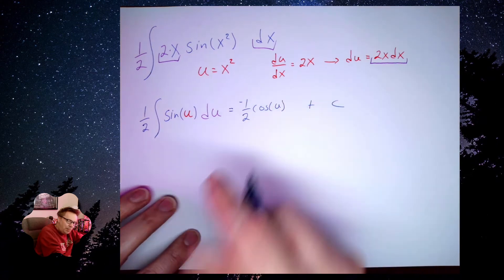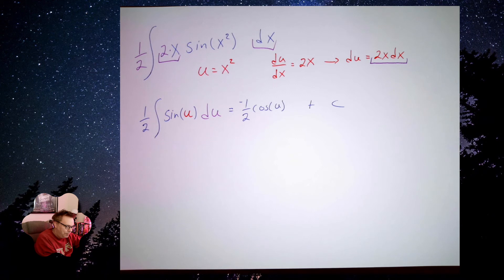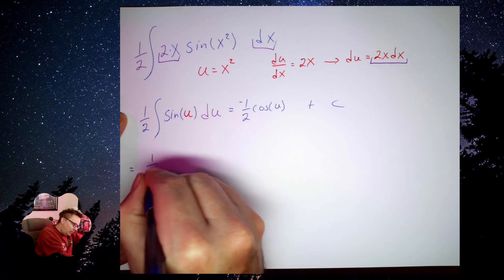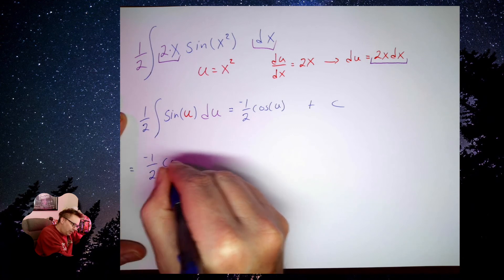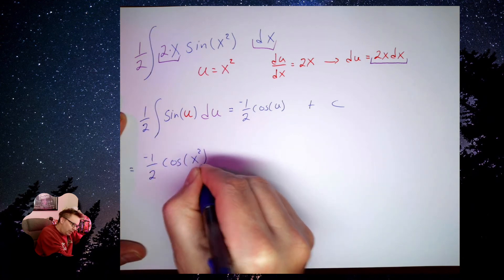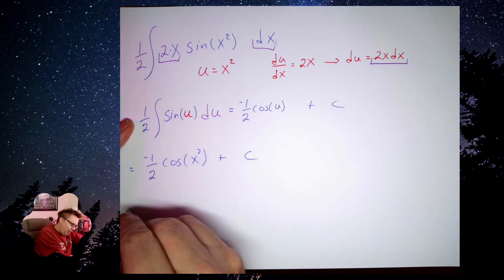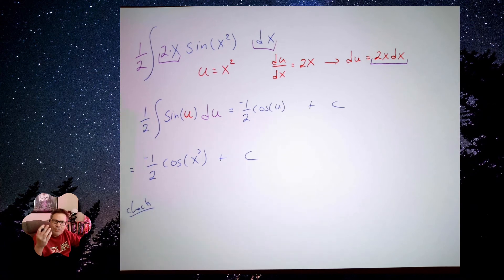Notice that I put the little negative sign in front of the one half. Doing a final substitution here, I get negative one half cosine of x squared plus c. Now let's check our answer.